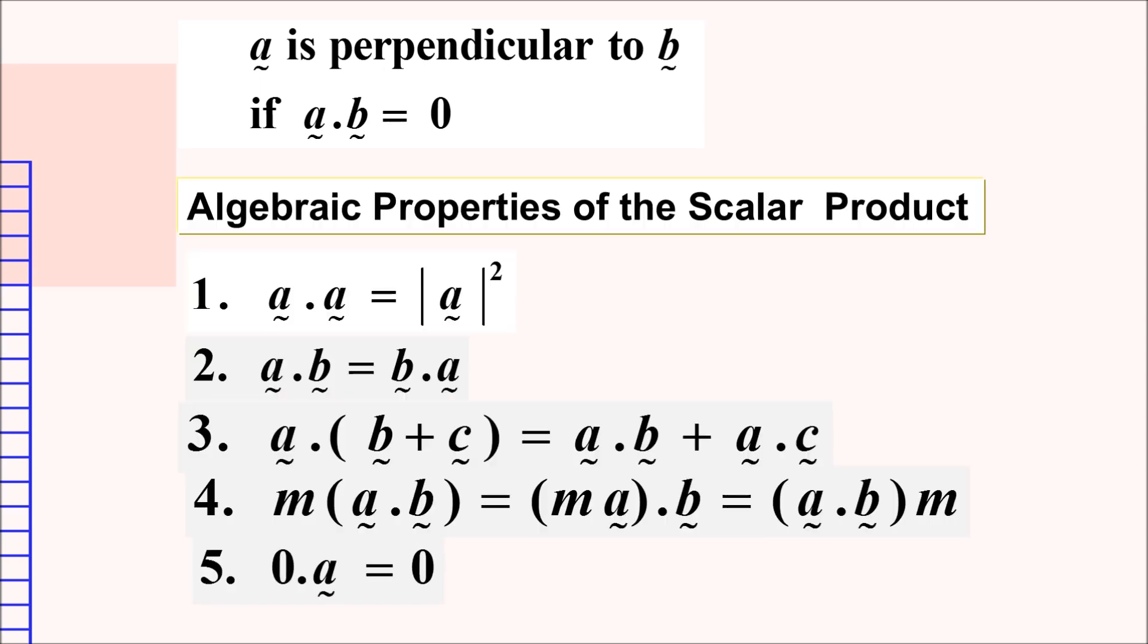Now, let us also review on some properties of scalar product. Number 1, vector a dot vector a is equal to magnitude of a squared. Number 2, a dot b is equal to b dot a. Number 3, a dot b plus c is equal to a dot b plus a dot c. Number 4, m times a dot b is equal to ma dot b also equals to a dot b times scalar m. And 0 times a is equal to 0.